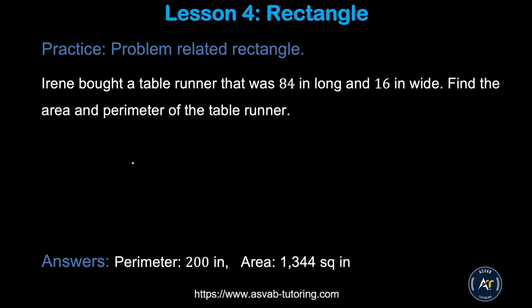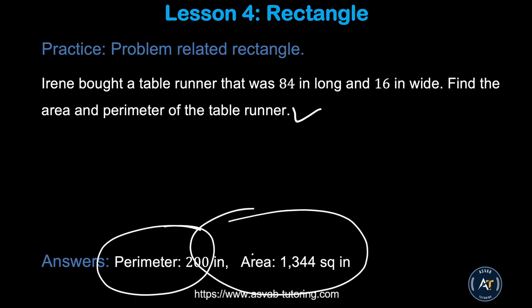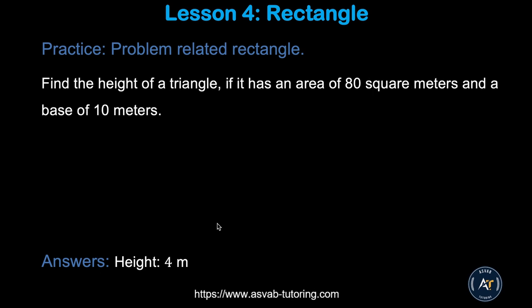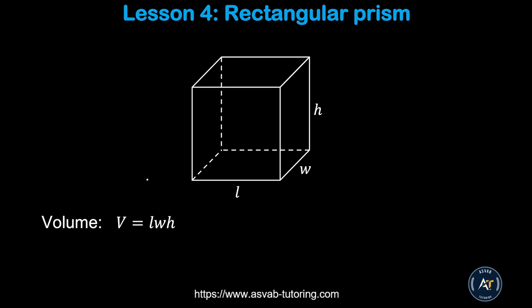Pause the video and try the practice problem by yourself and make sure you get the correct answer. There is another practice problem where you have to find the area and perimeter of a table runner — make sure you get a perimeter of 200 and area of 1,344 square inches. There is also a problem where you find the height; make sure you get height equal to 4.